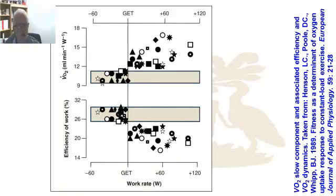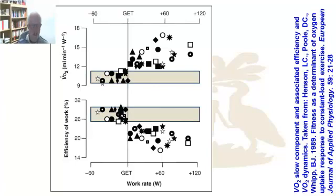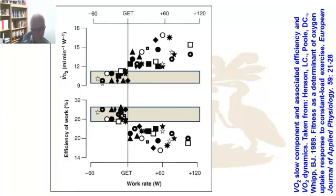This summarizes it for us. You can see the gas exchange threshold (GET) at the top. There's efficiency of work on the bottom part of the panel and the VO2 response above it. You can see that we are highly efficient for work below the gas exchange threshold, but as we go above it, we become less and less efficient — efficiency falls. As efficiency falls, the VO2 response goes up, with each symbol representing a different study. It ties together quite neatly: the association between muscular efficiency once we go beyond gas exchange threshold and the VO2 response — and why we get a VO2 slow component — those two are inextricably linked.